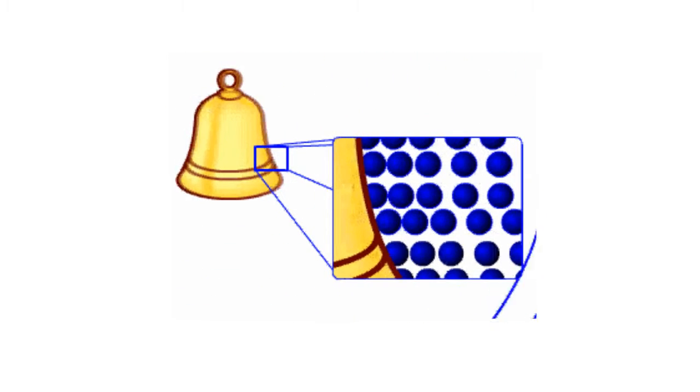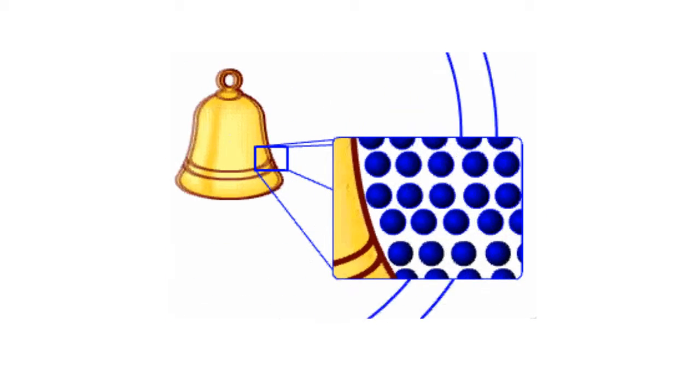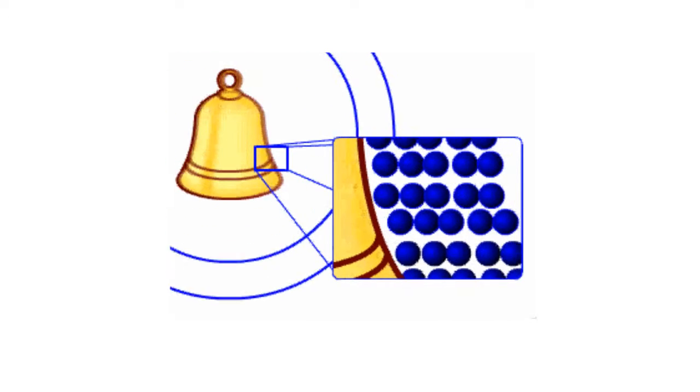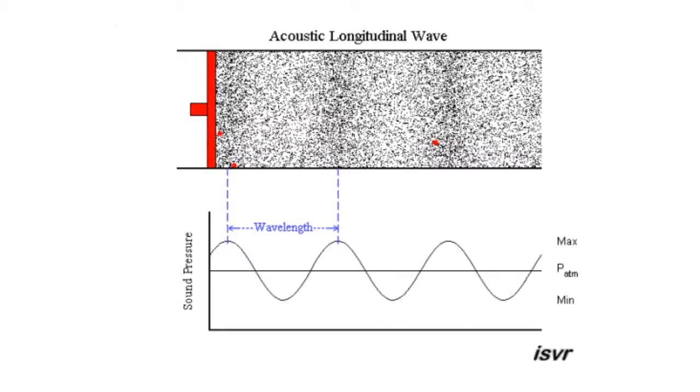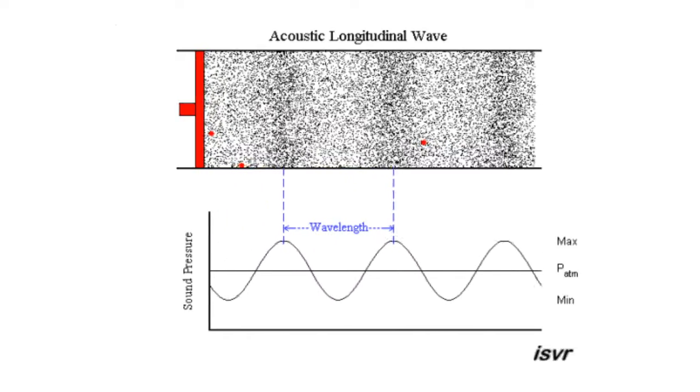When an object, such as a bell, vibrates, it performs small movements forward and backwards, with which it continuously pushes and pulls air particles next to it. If we could visualize sound, it would actually look like the upper animation.